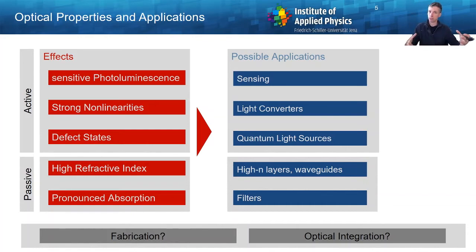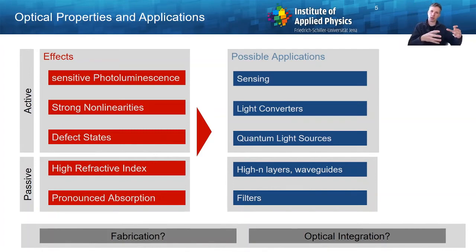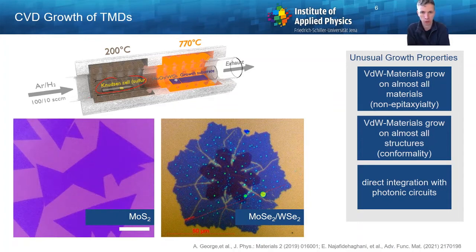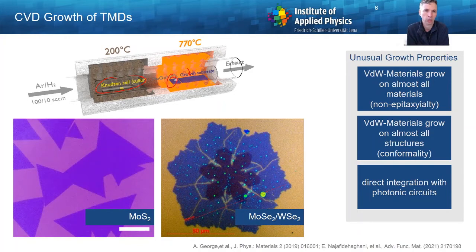However, you can't just use the materials by themselves. You first have to fabricate these materials and integrate them with optical systems in a scalable manner, because the state of the art at the moment is to transfer from bulk material, which does not lend itself for many applications. The approach we pursue is chemical vapor deposition, where you take vapors of chalcogenide — in this case sulfur — and of your transition metals, bring them in contact with your growth substrate in a reactor, and if you do everything right you will observe growth of monolayer crystals on your substrates.